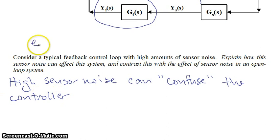Because high sensor noise will cause your error to jump up and down all the time, because your error is your set point minus your sensor value. Well, if the sensor value is jumping up and down all the time, then your error is also jumping up and down all the time,